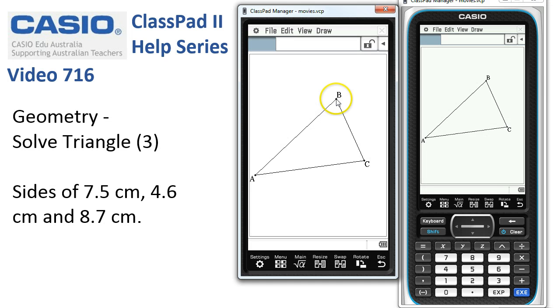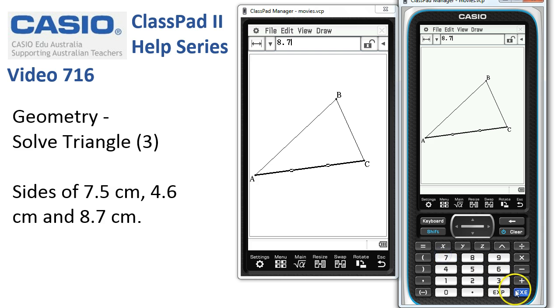Finally, we deselect, select the last side, select the measurement that's wrong, over to the buttons, type in 8.7 and lock that measurement in with Execute. Three sides have been locked in.